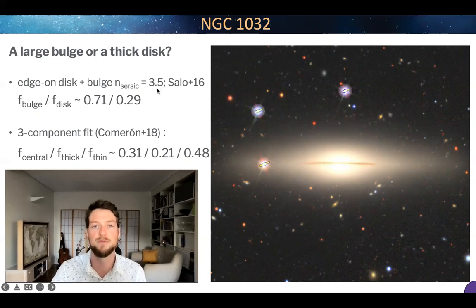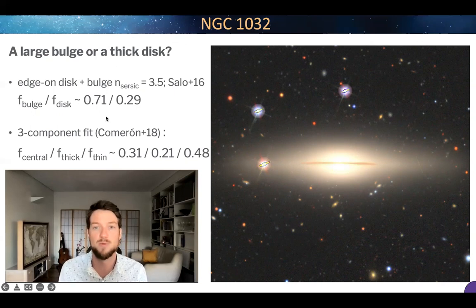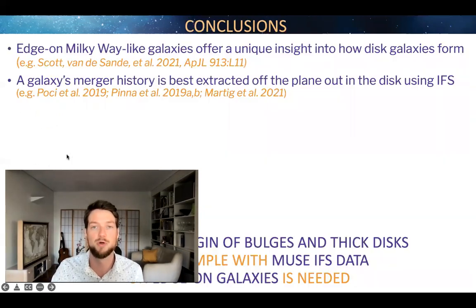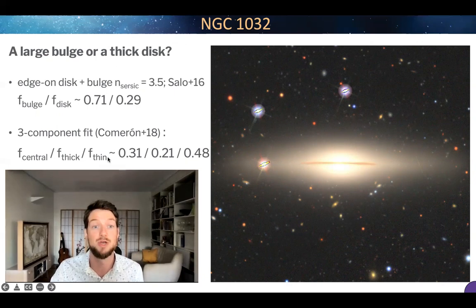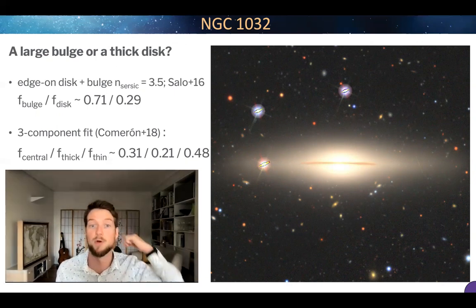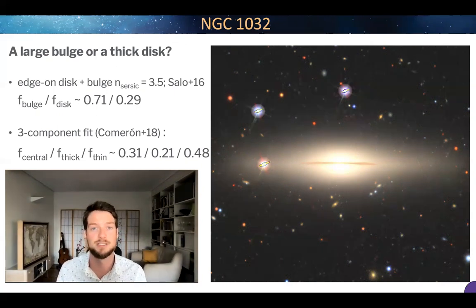However, as soon as you start adding a thick disk component to the fit, so now you do a three-component fit, you actually see that a lot of the light in the bulge or in the central component gets decreased, and the vast majority of mass is in this thick and thin disk. 31% in the central components versus 21% and 48% in the thick and thin disk.